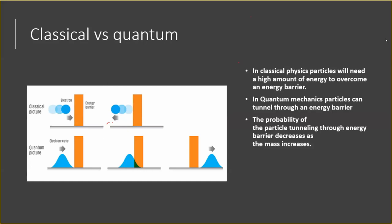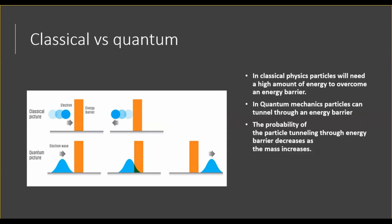In classical physics, particles will need a high amount of energy to overcome an energy barrier. If the energy of the particle is less than the potential energy, then the particle will not pass through. But in quantum mechanics, particles can tunnel through an energy barrier. The probability of the particle tunneling through the energy barrier decreases as the mass increases.